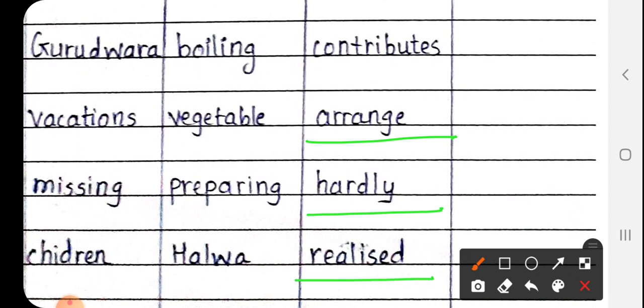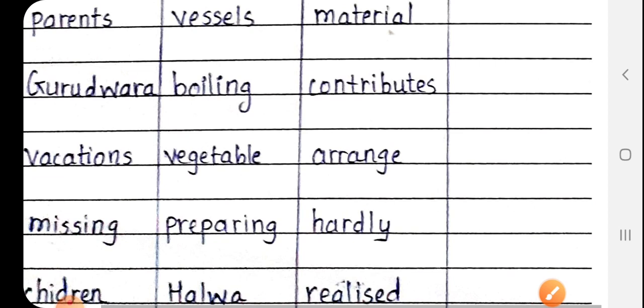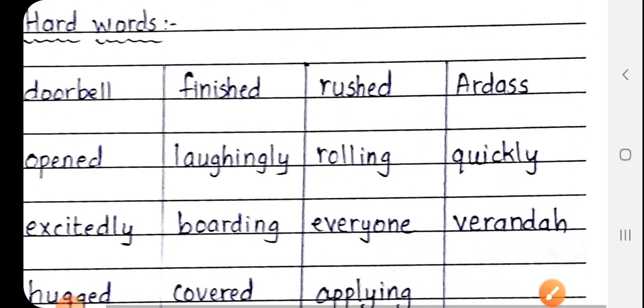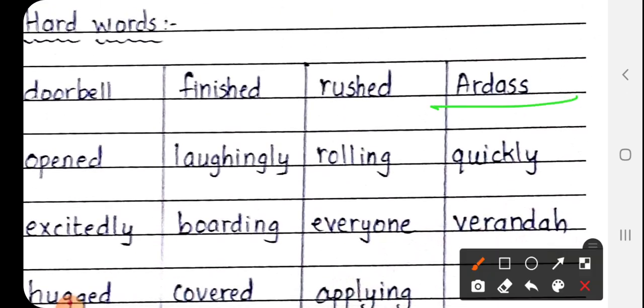Next is Realized, R-E-A-L-I-S-E-D. Realized means ehsaas hua. Next is Ardass, A-R-D-A-double S. Ardass means prayer or prarthana. The prayer done at Gurudwara is called Ardass. Next is Quickly, Q-U-I-C-K-L-Y. Quickly means jaldi se.